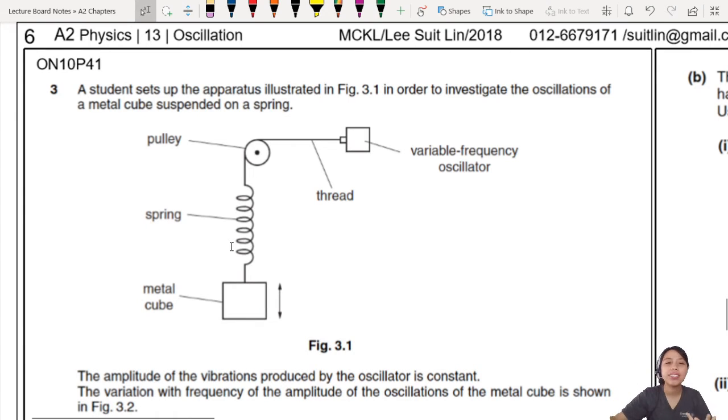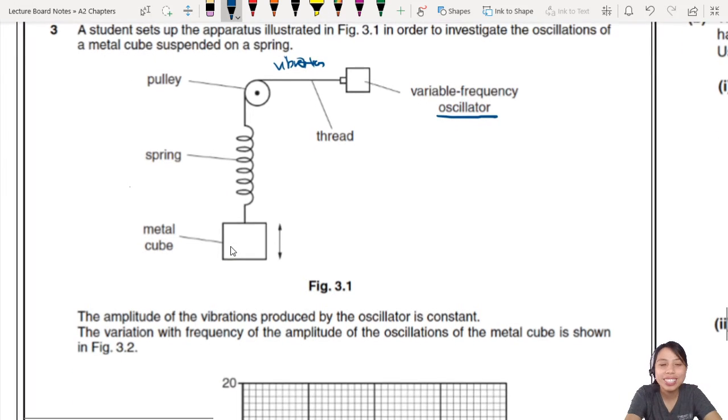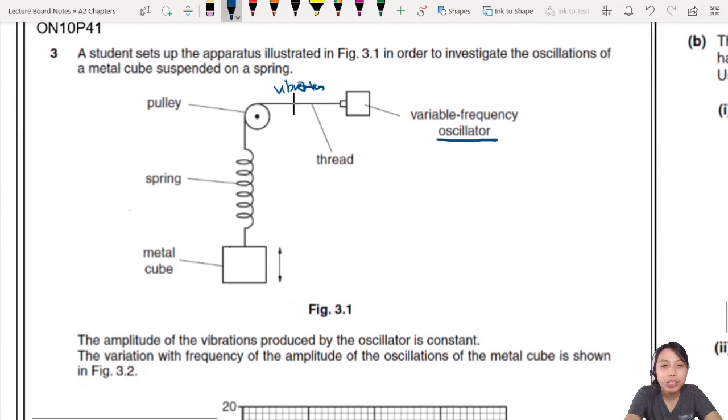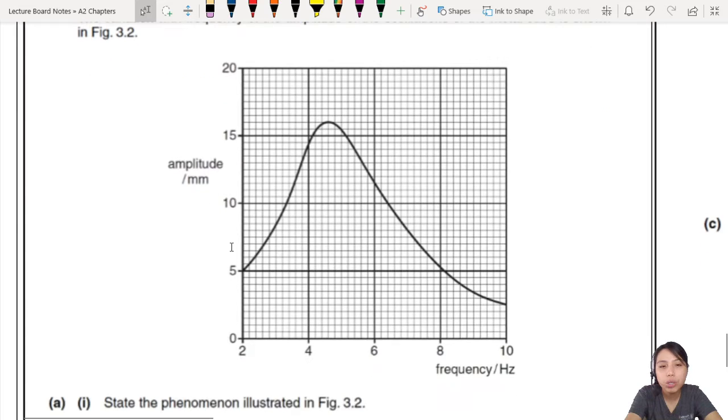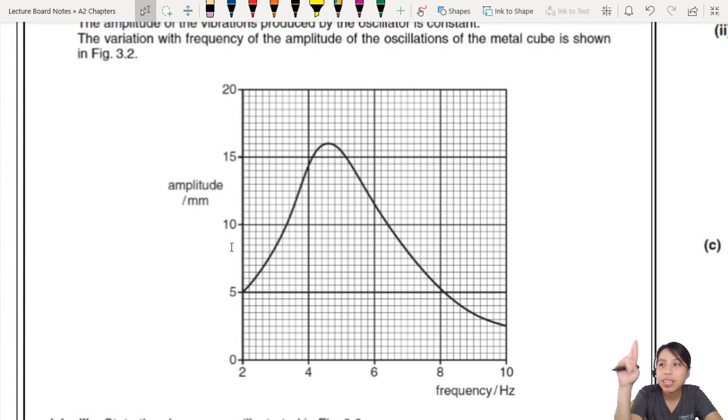This is a setup to test the frequency response of the spring. Here you have an oscillator, and then on the other side, a spring. This oscillator is going to cause vibrations, and the vibrations will cause the spring to oscillate. You will see how later. The amplitude of the vibration produced is constant. The variation with frequency of the amplitude of the metal cube is shown. So this cube is going up and down at a certain amplitude.